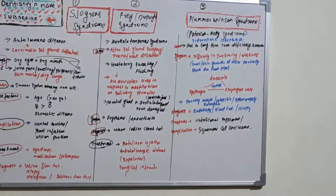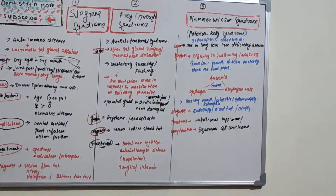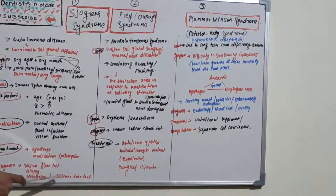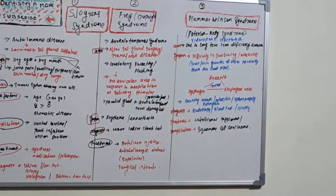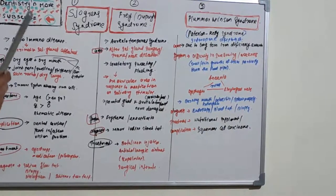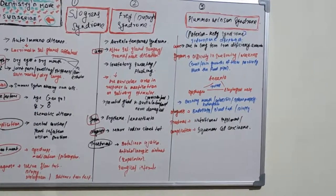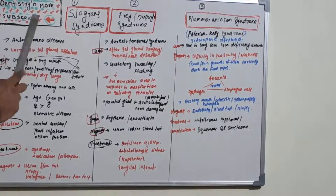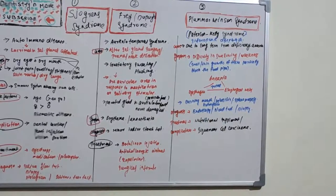Patients can also be advised to sip water frequently and use saliva-stimulating chewing gums. Diagnosis can be done via saliva flow test, sialogram, and Schirmer's tear test, as well as biopsy. The key triad to remember for Sjögren's syndrome is dry eyes, dry mouth, and rheumatoid arthritis — it is an autoimmune disease affecting lacrimal and salivary glands.